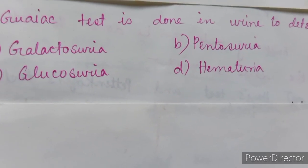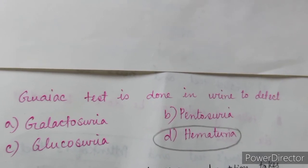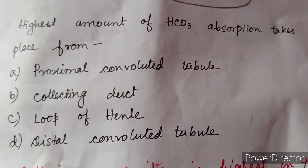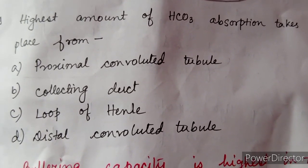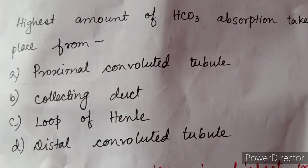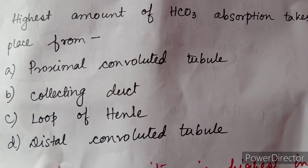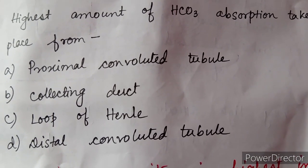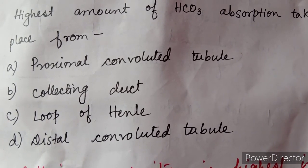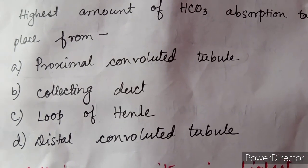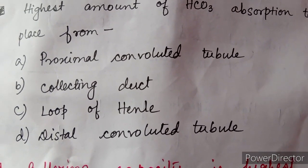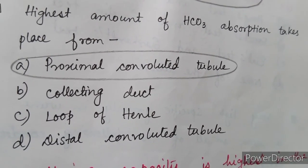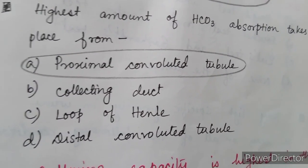Guaiac test is done in urine to detect — option A: galactosuria, option B: pentosuria, option C: glucosuria, option D: hematuria. The correct answer is option D: hematuria. Next question: highest amount of HCO3 absorption takes place from — option A: proximal convoluted tubule, option B: collecting ducts, option C: loop of Henle, option D: distal convoluted tubule. The correct answer is option A: proximal convoluted tubule.